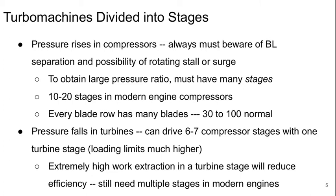A modern engine compressor would probably have 10 to 20 stages, and every blade row has many blades — between 30 and 100 is normal. You can do the math and start getting an idea of how many blades you have to make for the compressor of an engine. In turbines, the pressure falls and we can usually drive six to seven compressor stages with one turbine stage. The loading limits are much higher because of the favorable overall pressure gradient that they have.